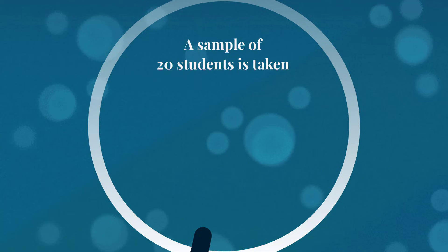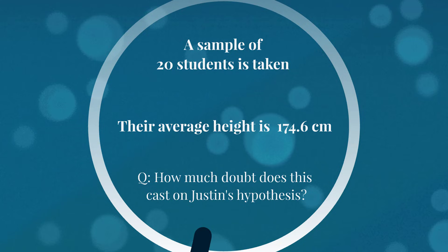Here we've got a sample of 20 students, and the average height of these students is 174.6 centimeters. Now I'm going to ask you: how much doubt do you think this casts on my hypothesis? I've said I think the average height is 175 centimeters. We've got a small sample and it appears to be slightly less than that. But does that really cast a lot of doubt on my hypothesis? Probably not, right? You understand the concept of random variation. We've got a random selection of 20 students and it's possible that they were slightly less than the true average, which might still be 175 centimeters. So it's not outside of the realms of possibility that my hypothesis is still correct.